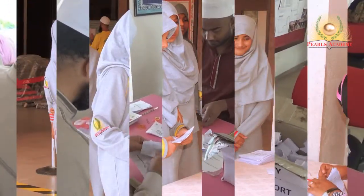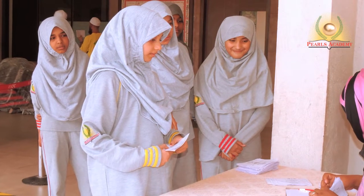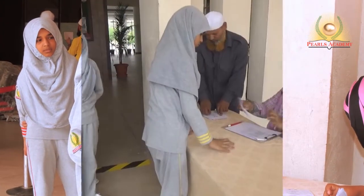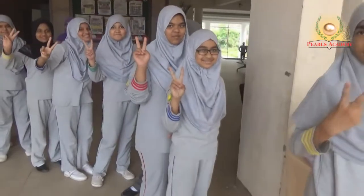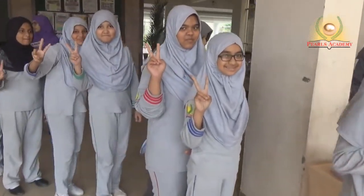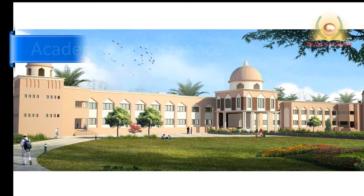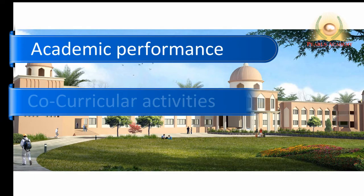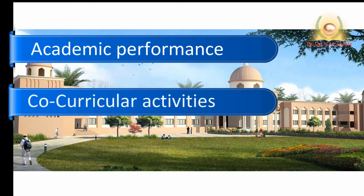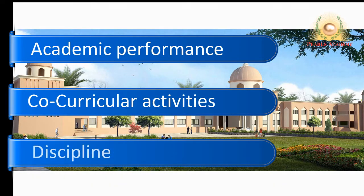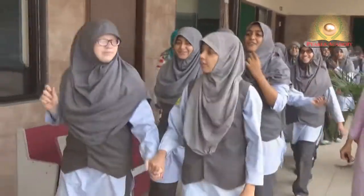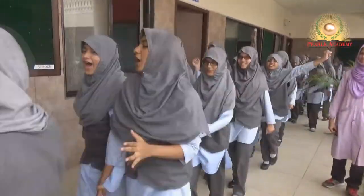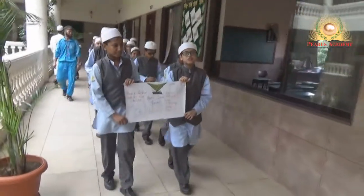The elections followed all the rules and steps starting from the declaration of posts. Nominations were filed by the students. The criteria to file nominations included academic performance, participation in co-curricular activities, and discipline. After nominations were filed, different groups of students campaigned for their leaders in the school premises.